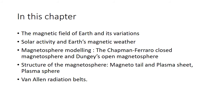Today in this chapter, we have learned about the magnetic field of Earth and its variation, the solar activity and about the Earth's magnetic weather, the magnetosphere modeling given by Chapman-Ferraro — its closed magnetosphere model — and the open magnetosphere model given by Dungey. We have also looked into the structure of the magnetosphere and learned about the Van Allen radiation belts. Thank you.